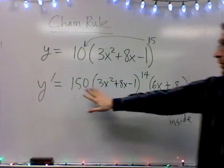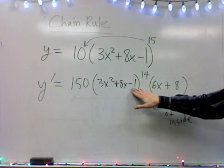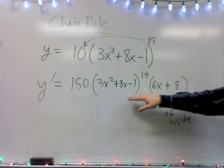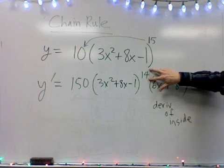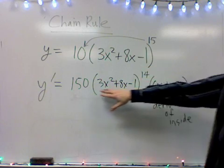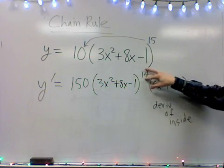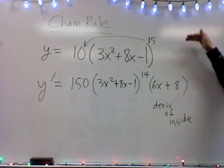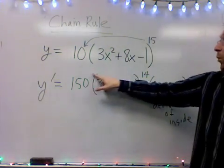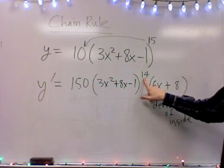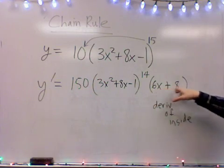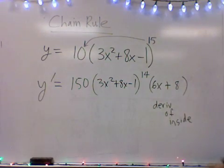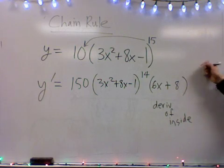Now don't get tempted to multiply the 150 into the parentheses here. You are going to be tempted — how many times in algebra do you see a number and multiply it through? In this case, that's not the case, because this exponent is preventing you from going inside. Remember with order of operations, it goes exponents before multiplication. If you wanted this 150 to go through the parentheses, you'd have to wait until the exponent does its thing. This is in a nice convenient form — it's all factored, so just leave it as it is.